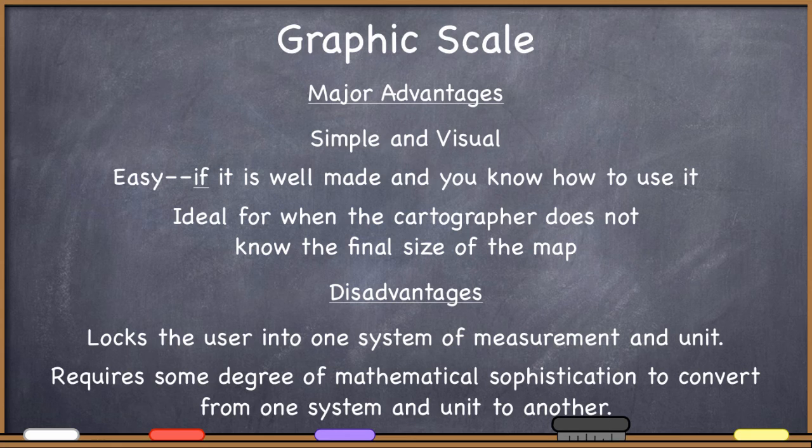So in certain situations though, it is common to see scale expressed more than one way on a particular map. Sometimes maps have all three. Sometimes the maps will display the representative fraction, give you a verbal scale for that, and give you one or sometimes more graphic scales for the simple and visual depiction of the scale. So that's completely possible too.